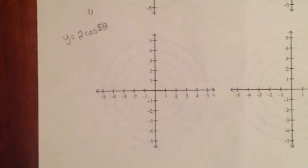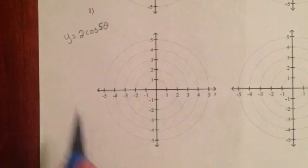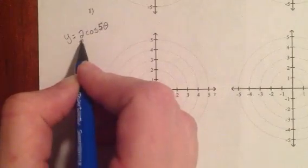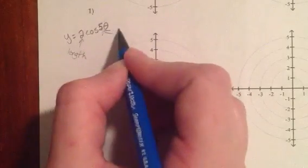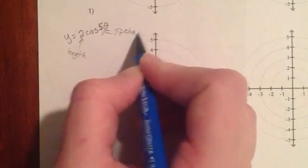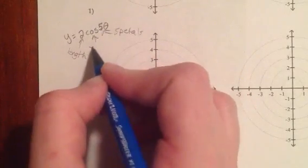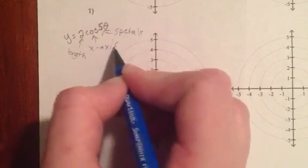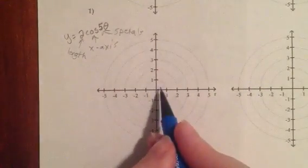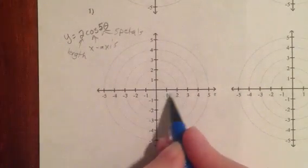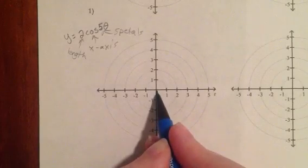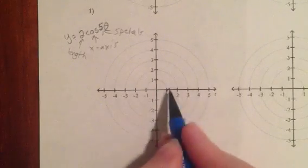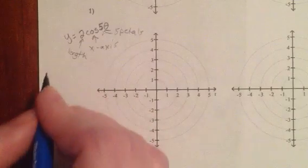So let's look at a cosine curve with odd petals. This one I have a length of 2, I have 5 petals, and I have x-axis symmetry. So this time I need to figure out is my first petal that I'm going to draw going to be here on the x-axis, or over here on the x-axis. So let's plug in this angle right here on the x-axis, which is 0.